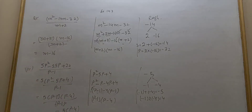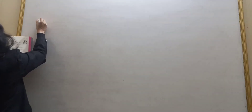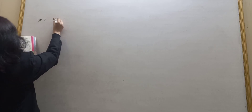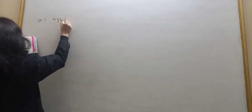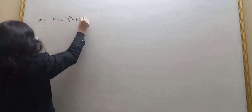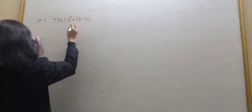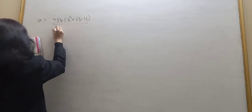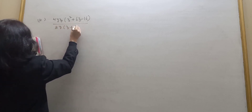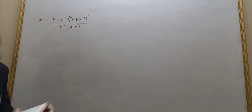Clear. Next part, fourth part: 4yz into z squared plus 6z minus 16, upon 2y into z plus 8.